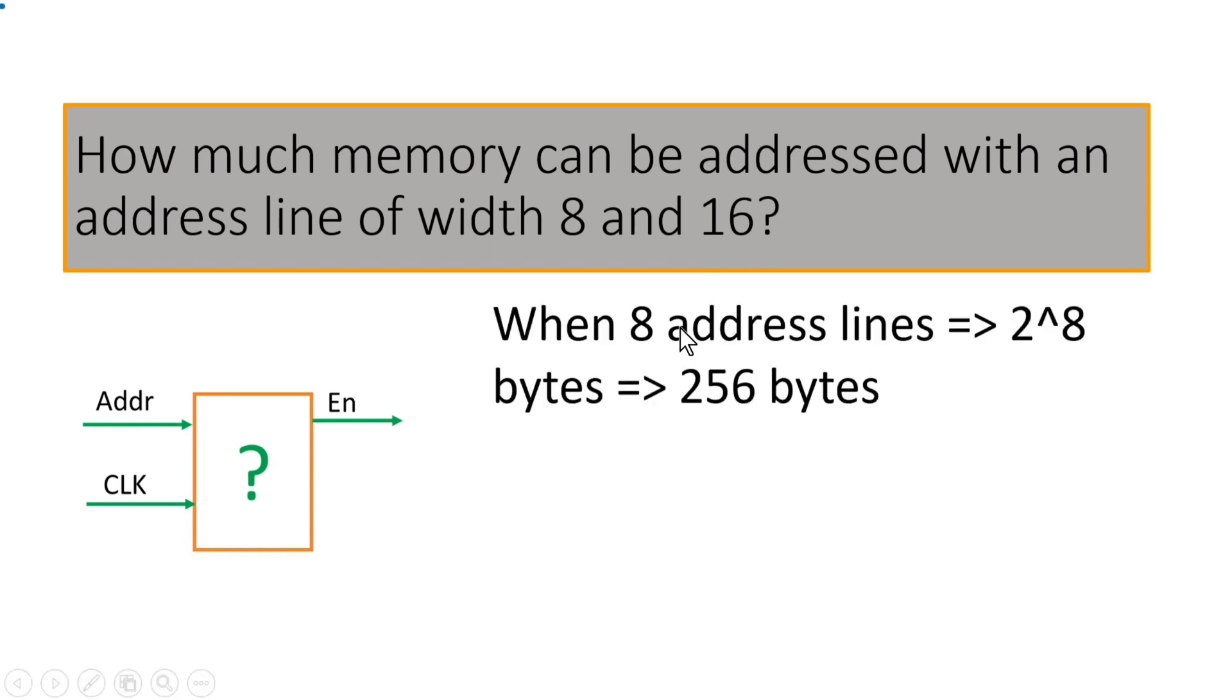So, whenever we have 8 address lines, the total memory that can be addressed is 2 raised to power 8. Let us assume that each location of memory is 1 byte, so 2 raised to power 8 bytes. 2 raised to power 8 is equal to 256 bytes. So with 8 address lines, we can address 256 bytes of memory.